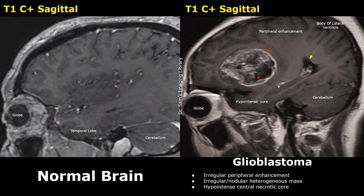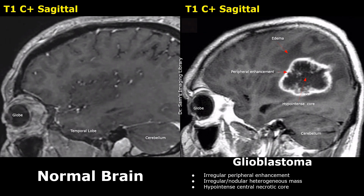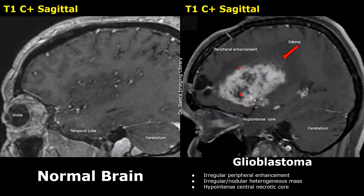Now we will look at some sagittal images of the brain. In this image, the mass is mostly heterogeneous but we can still notice peripheral enhancement and a hypo-intense central core. Here is another sagittal image showing a glioblastoma in a contrast-enhanced T1 image with strong peripheral enhancement and a dark central core. Edema is also noted around the mass, appearing as dark gray areas. Some glioblastomas can have a predominantly enhancing appearance in a T1 contrast-enhanced image with a small hypo-intense central core. Irregular contours indicate that it is an infiltrating aggressive lesion. Edema is also present.